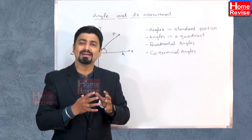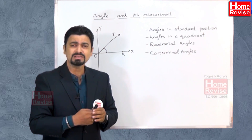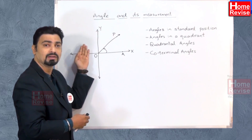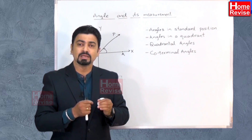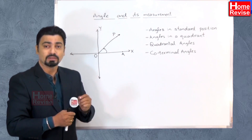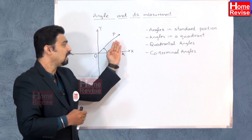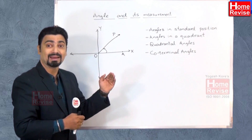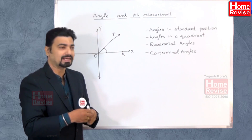With directed angles in standard position, we determine angles in a quadrant by checking whether the terminal arm lies in the first, second, third, or fourth quadrant. For example, in angle AOP, the terminal arm OP lies in the first quadrant, so we say that the directed angle AOP in standard position lies entirely in the first quadrant.